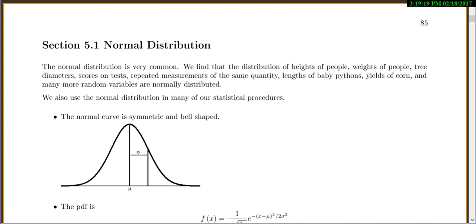We can find the normal distribution in things like heights of people, weights of people, tree diameters, scores on tests, repeated measurements of the same quantity. There's just so many things that are normally distributed. Now, not everything has a normal distribution, but many, many do.